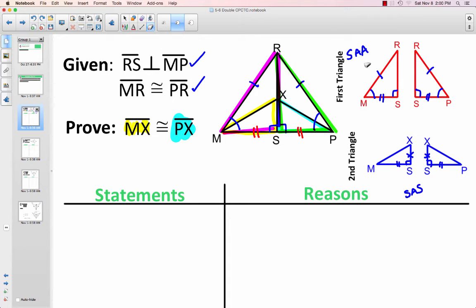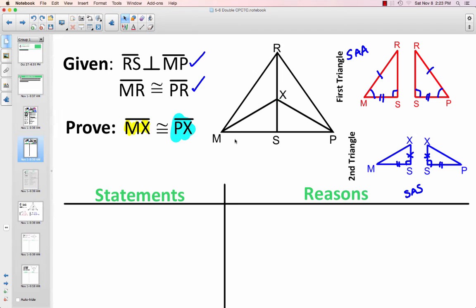So we need to prove these first two triangles in order to use CPCTC to get other sides in these second triangles. So now that we've made our plan, let's go ahead and write this out.